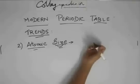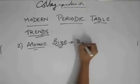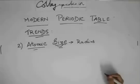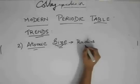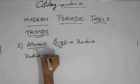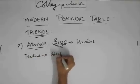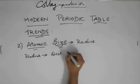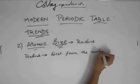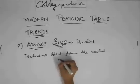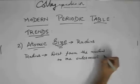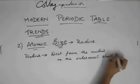The size of the atom can be directly measured by the radius of the atom, and the radius is nothing but the distance from the nucleus to the outermost shell or electron.